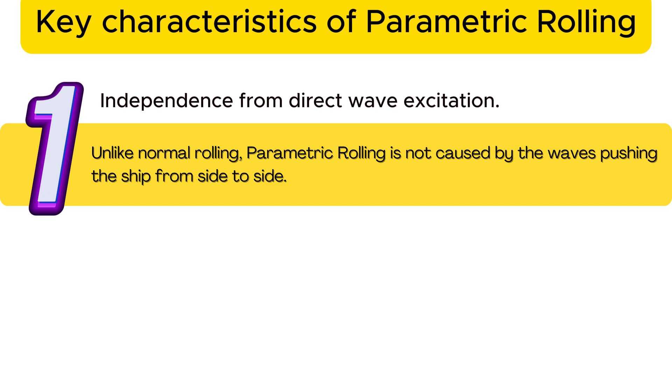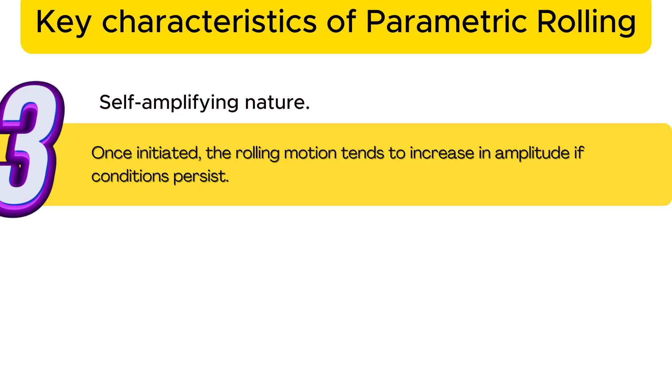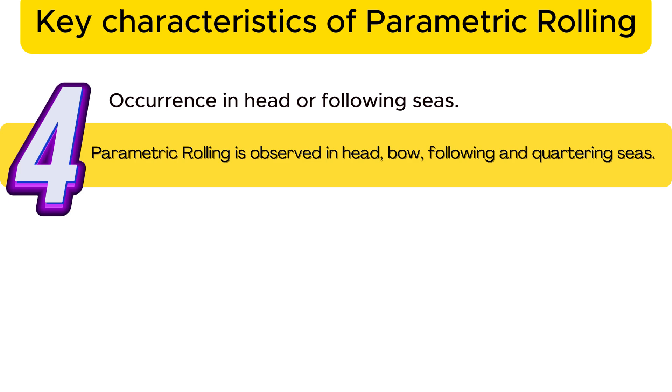Unlike normal rolling, parametric rolling is not caused by the waves pushing the ship from side to side. The rolling motion can develop quickly, sometimes in just a few roll cycles, often catching the crew off guard. Once initiated, the rolling motion tends to increase in amplitude if conditions persist.